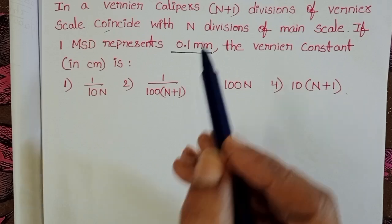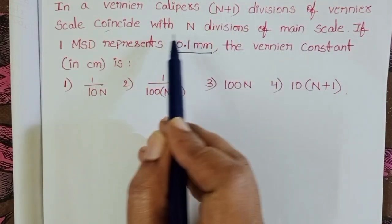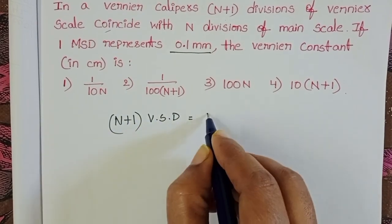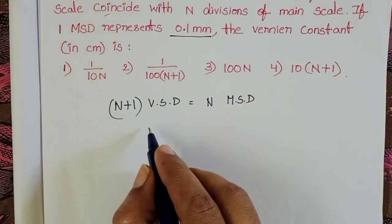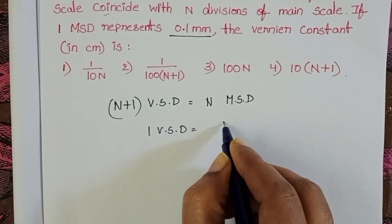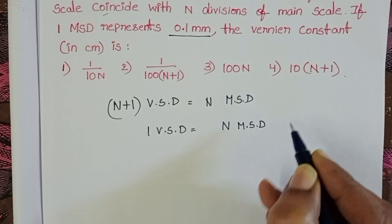In the given question we know (n+1) vernier scale divisions equals n main scale divisions. From this, 1 vernier scale division equals n main scale divisions divided by (n+1).